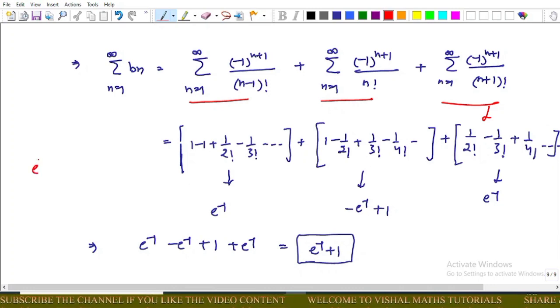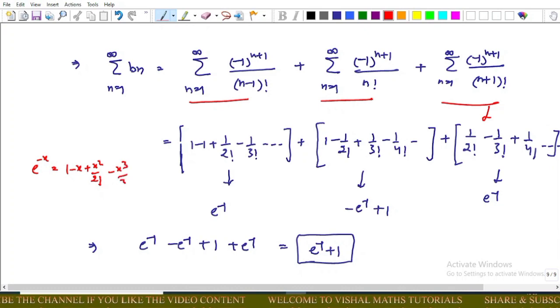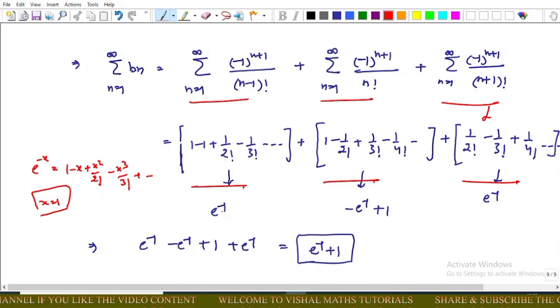As we know, the expansion of e power x is 1 plus x plus x squared upon 2 factorial and so on. And put x equals minus 1, and we get this expansion one by one. This implies this expansion is equal to e power minus 1, and this minus e power minus 1 plus 1, and this e power minus 1.